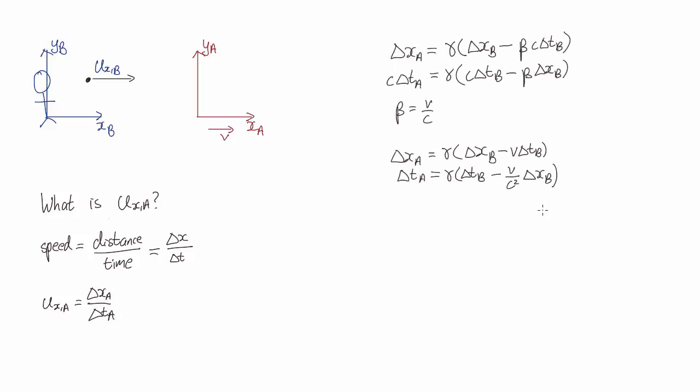Here we substitute in the Lorentz transformations. This doesn't look very helpful, but now we divide the top and bottom of the fraction by delta t_b, and we get this.